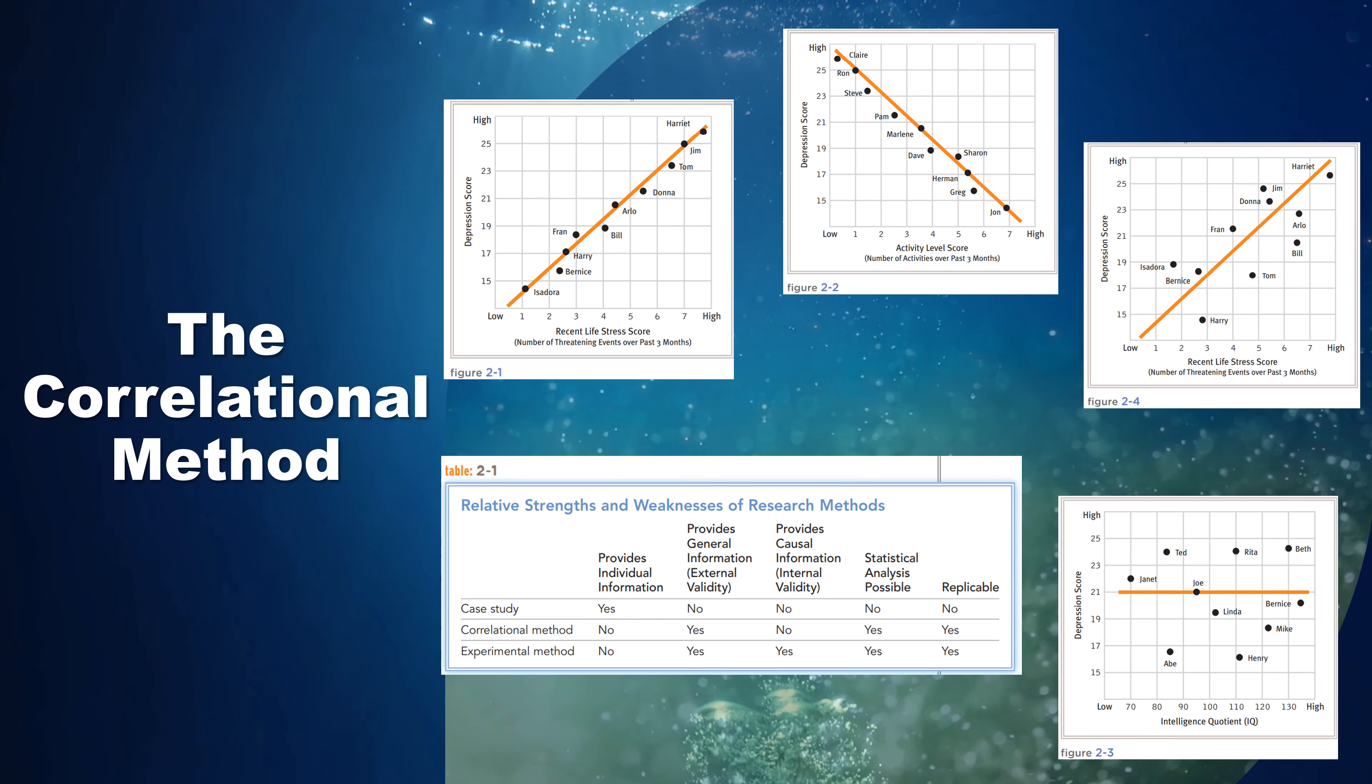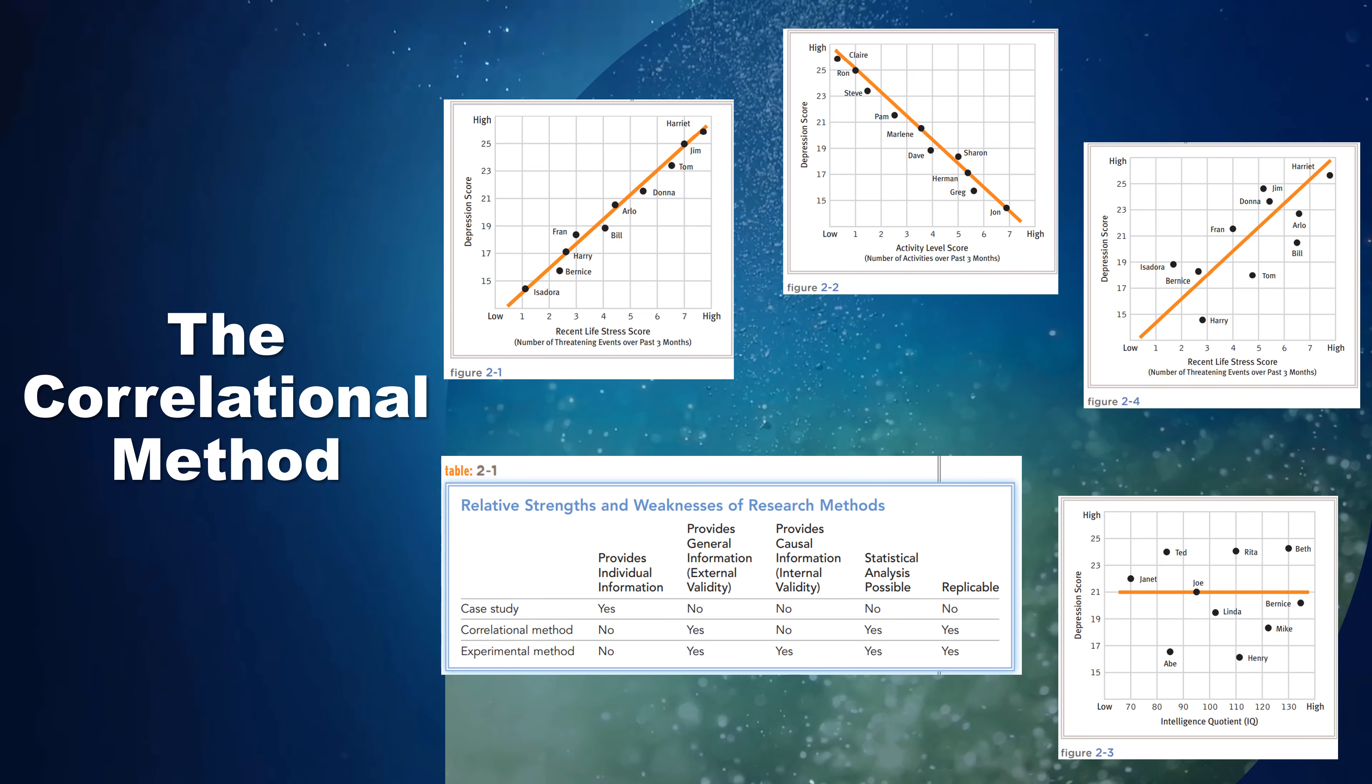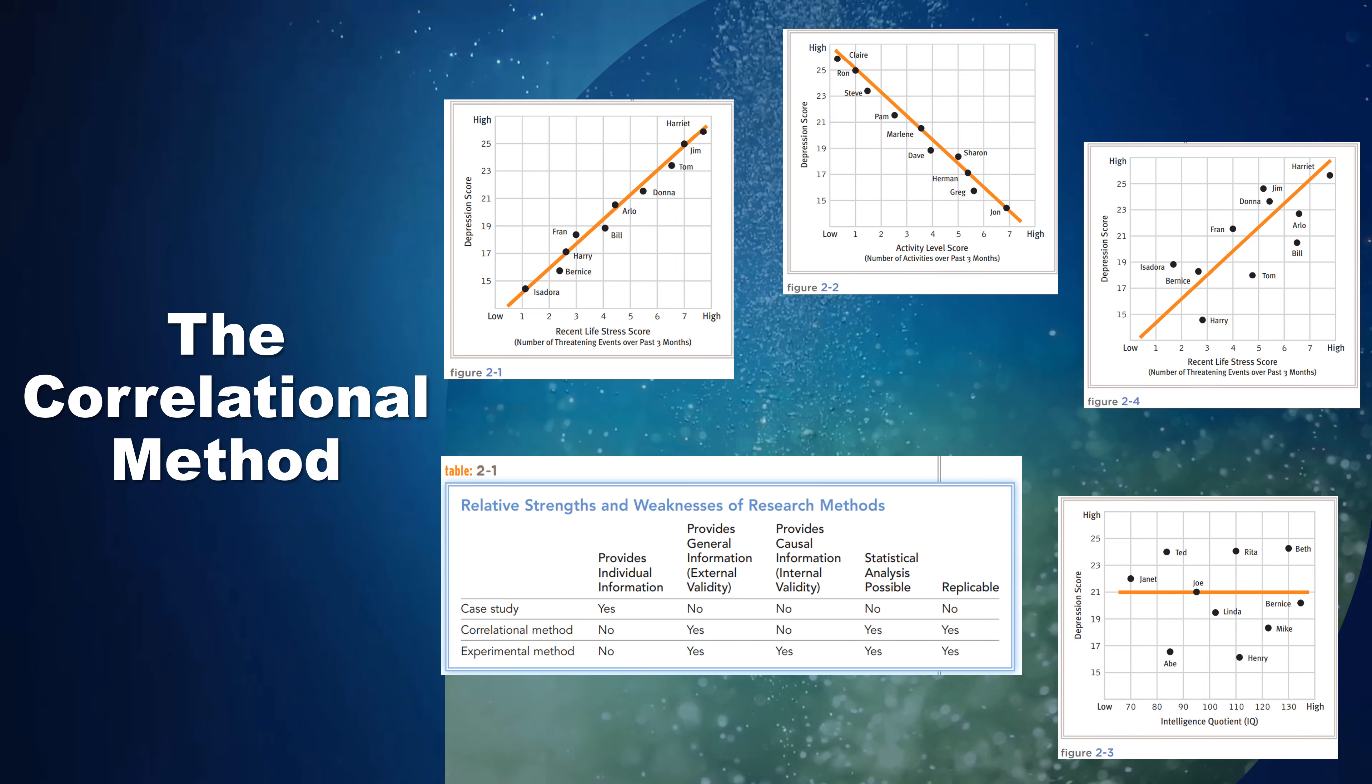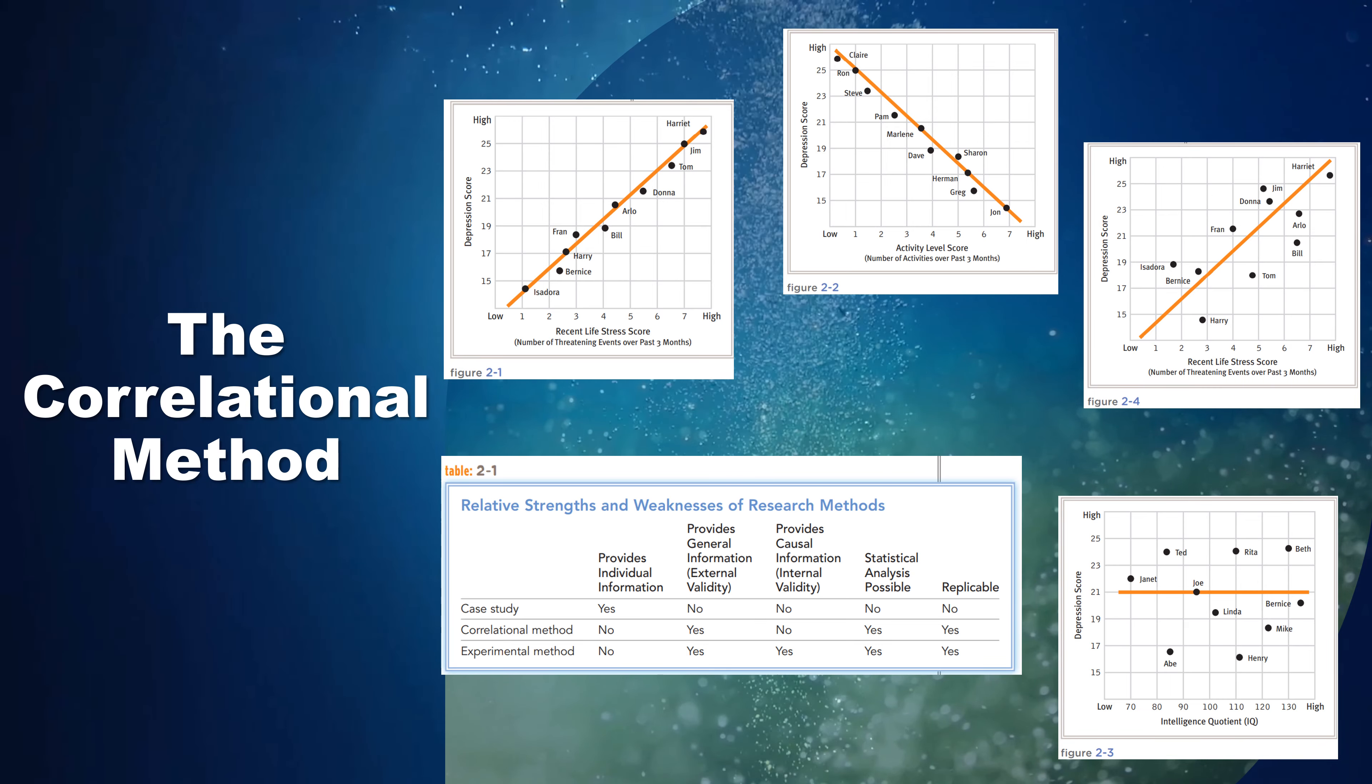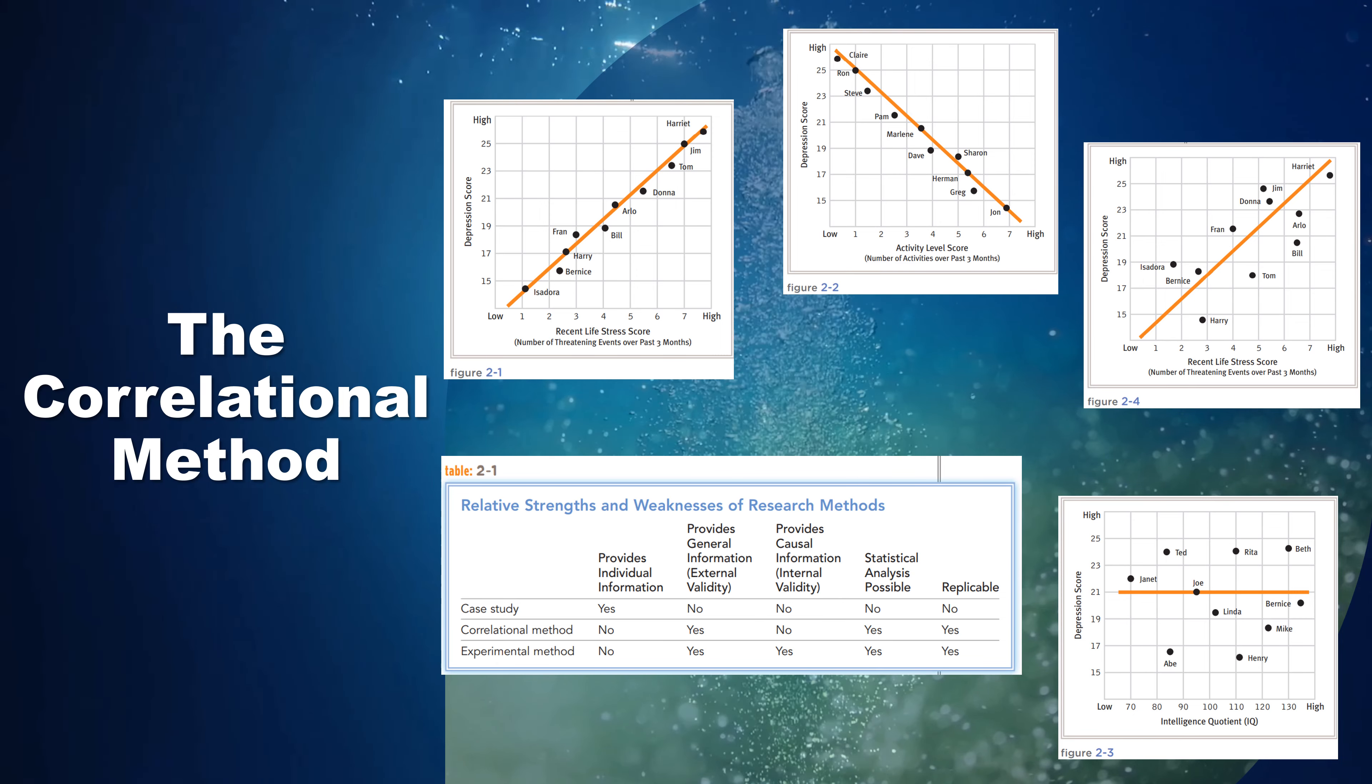When can correlations be trusted? Scientists must decide whether the correlation they find in a given sample of participants accurately reflects a real correlation in the general population. Could the observed correlation have occurred by mere chance? Scientists can never know for certain, but they can test their conclusions with a statistical analysis of their data, using principles of probability. In essence, they ask how likely it is that the study's particular findings have occurred by chance. If the statistical analysis indicates that chance is unlikely to account for the correlation they found, researchers may conclude that their findings reflect a real correlation in the general population.